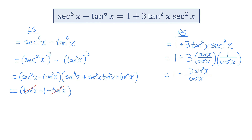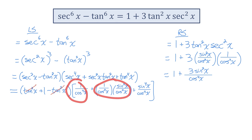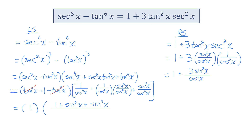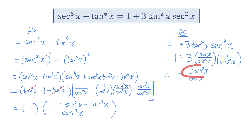Notice all three terms being added together share a common denominator of cosine to the power of 4 of x, so I can rewrite them as a single term over that common denominator. Comparing this to the right side, both have cosine to the power of 4x in the denominator — great. On the right side I have three sine squareds, but over here I just have one sine squared. So I'm going to have to rewrite the other two terms to generate two more sine squareds.